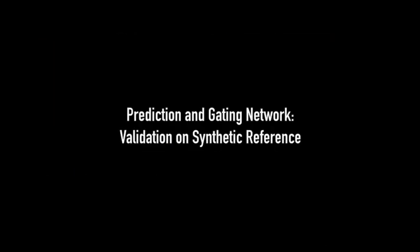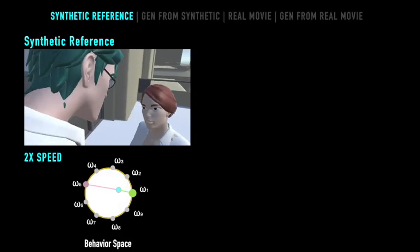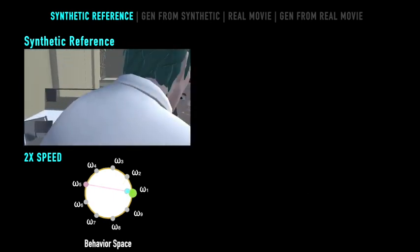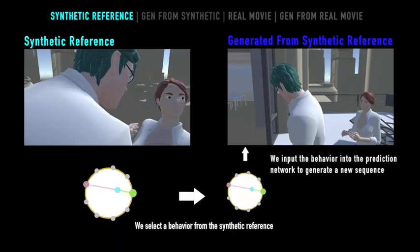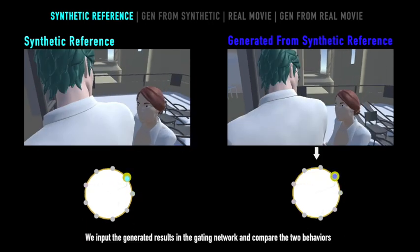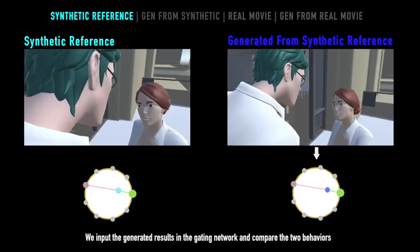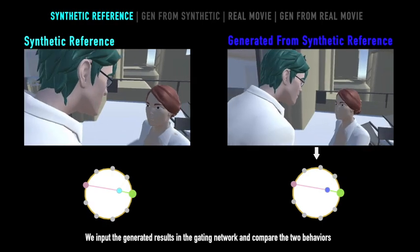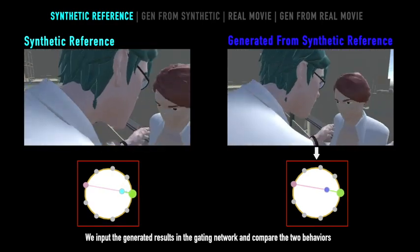We now perform a validation of our gating plus prediction network. We start by selecting a synthetic reference clip, and use the gating network to estimate the camera behavior within our camera behavior space. We use this camera behavior to compute a new camera motion on the same 3D animation. We feed the prediction network with character features from the animation, and the prediction network computes the camera path corresponding to the selected behavior. As you can observe, both camera motions are similar.